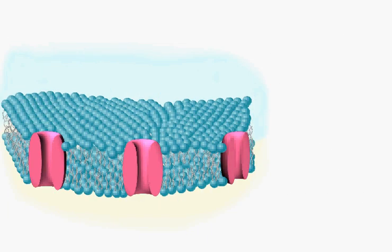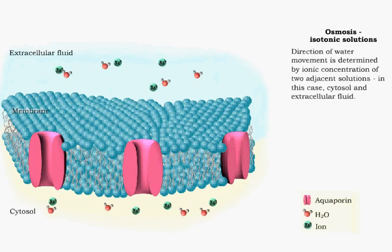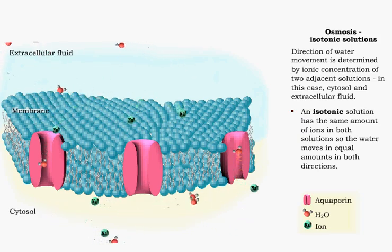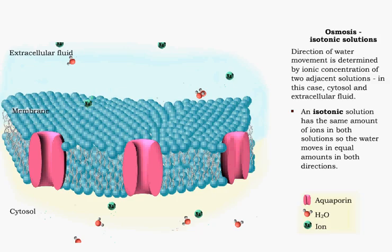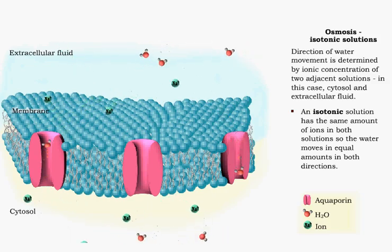The direction of osmosis depends on the relative concentrations of solutes in the cytosol and extracellular fluid. If the ion concentration is the same in both solutions, then water moves in equal amounts in both directions.